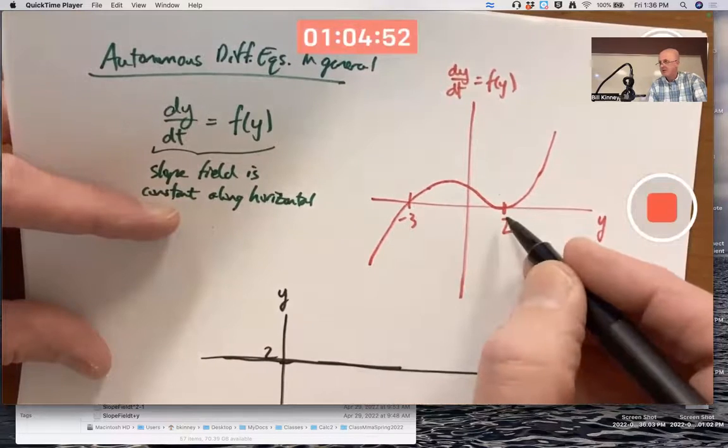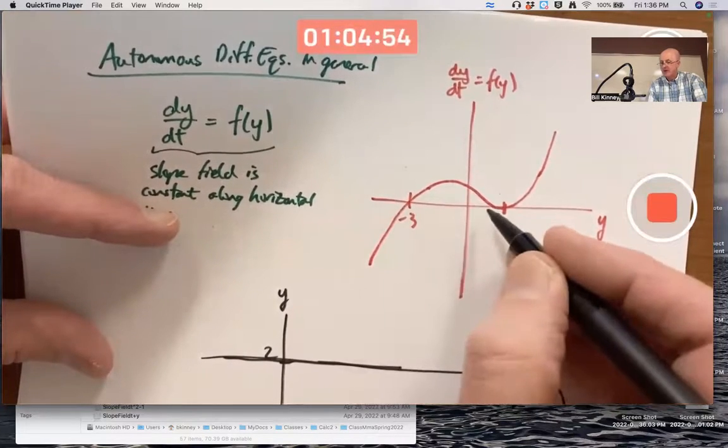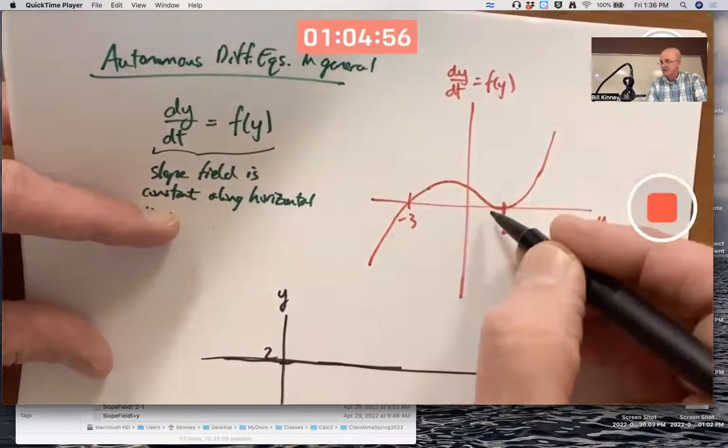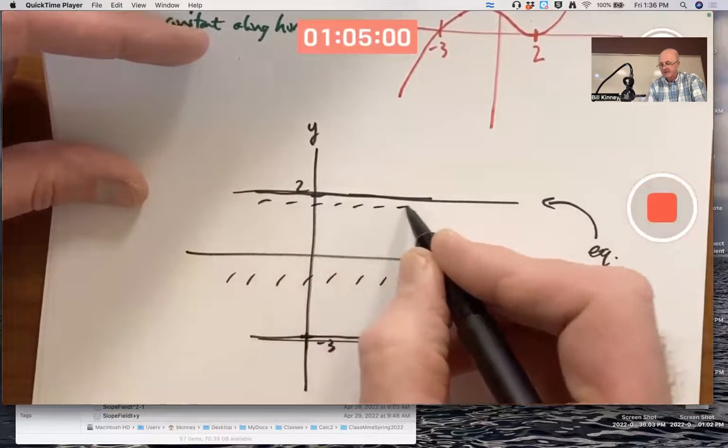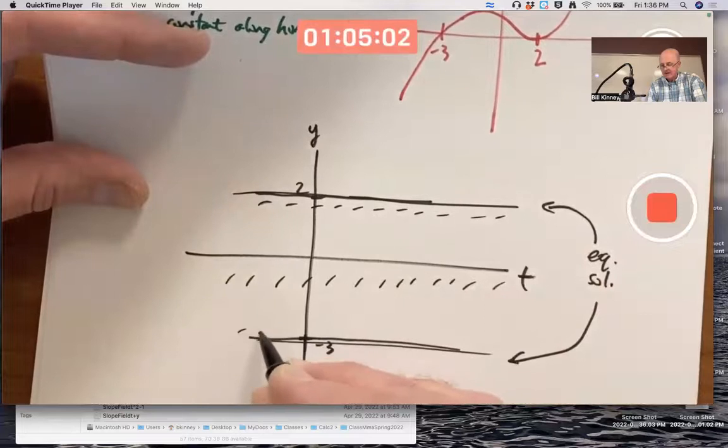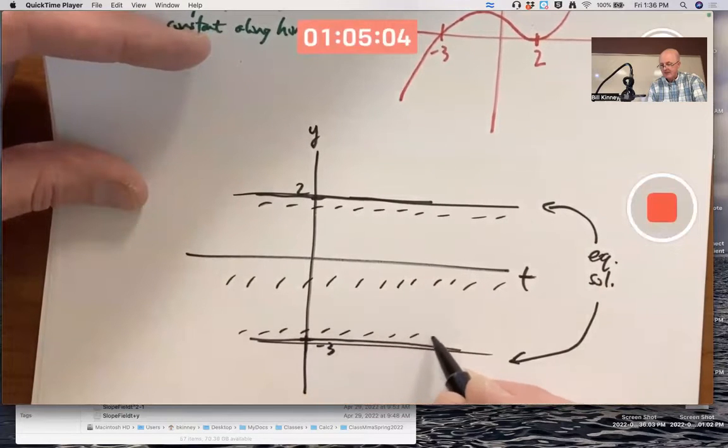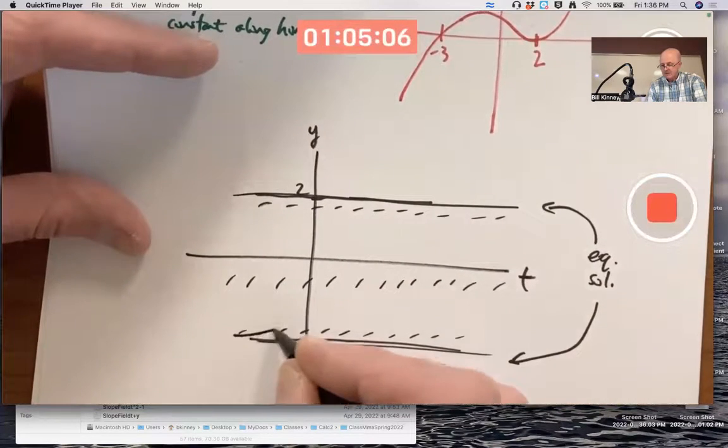When you get close to negative 3 or close to positive 2, the slopes get close to zero because the output of this function gets close to zero. So up here you're going to have slopes closer to zero but still positive. Same kind of thing down here. And your solutions are going to look like this.